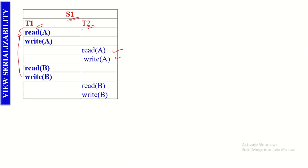That is, it has to be determined as a serializable schedule. When a schedule is determined as serializable, it always gives consistent result. That is the reason we go for determining whether the given schedule is serializable or not. So to determine this schedule as serializable, let us apply the view serializability concept.